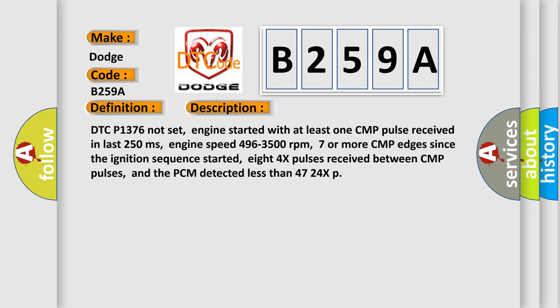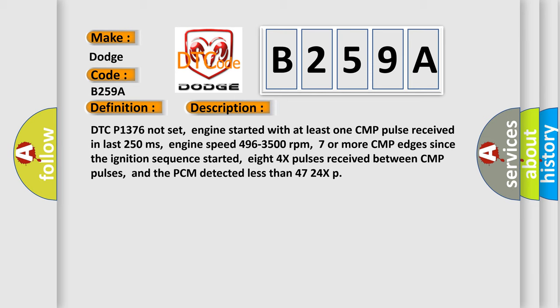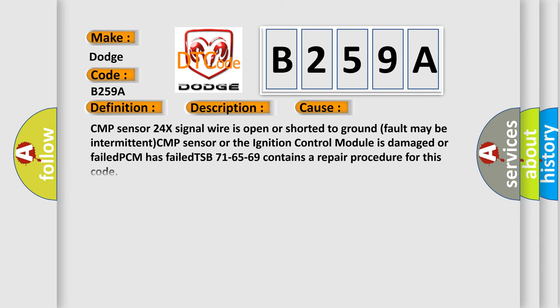This diagnostic error occurs most often in these cases: the CMP sensor 24x signal wire is open or shorted to ground — the fault may be intermittent. The CMP sensor or the ignition control module is damaged or failed. The PCM has failed. TSB 716569 contains a repair procedure for this code.